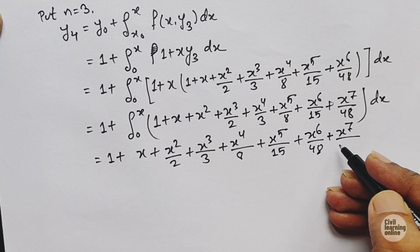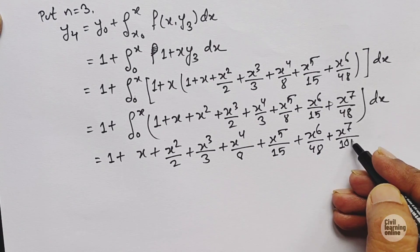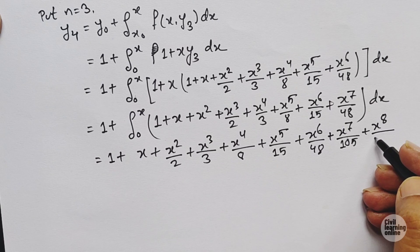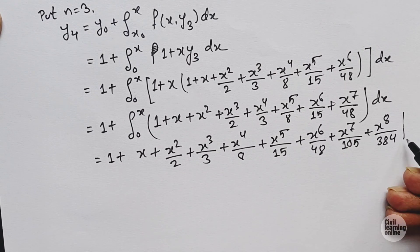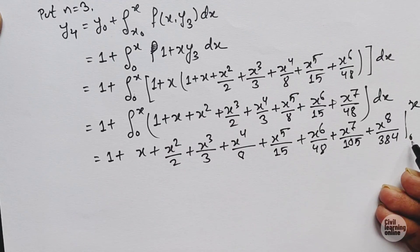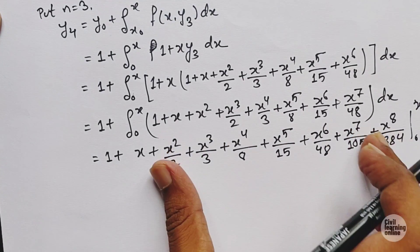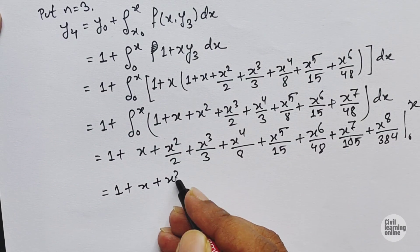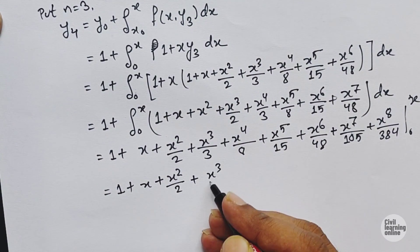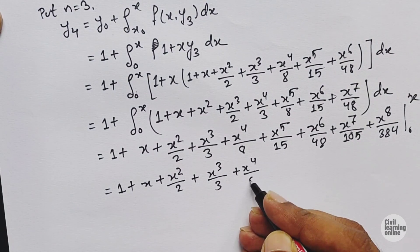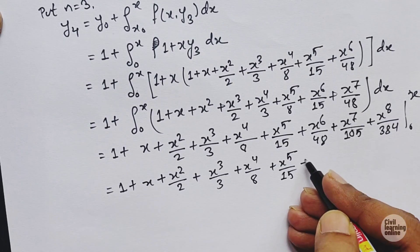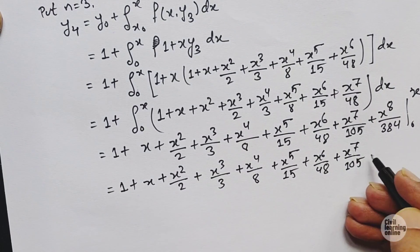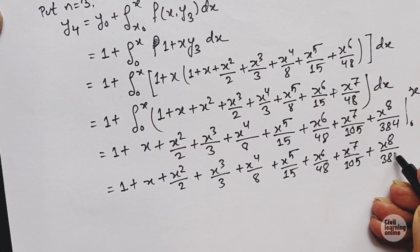After multiplying and integrating, with x to the power 7 upon 7 times 15 giving 105, and x to the power 8 upon 48 times 8 giving 384, and applying the upper and lower limits, our final answer is: y4 equals 1 plus x plus x squared by 2 plus x to the power 3 by 3 plus x to the power 4 by 8 plus x to the power 5 by 15 plus x to the power 6 upon 48 plus x to the power 7 upon 105 plus x to the power 8 upon 384.